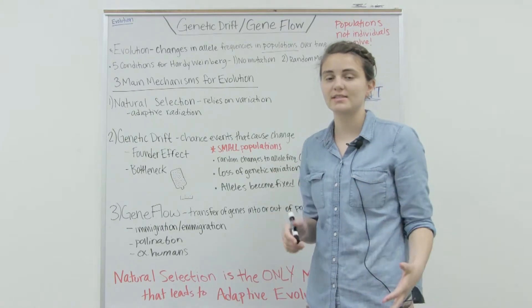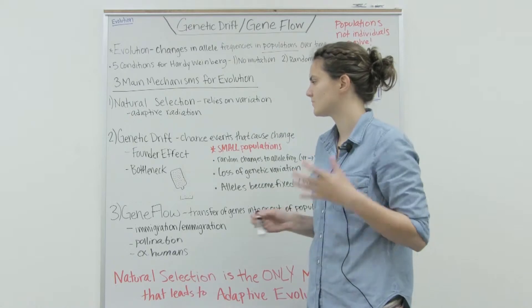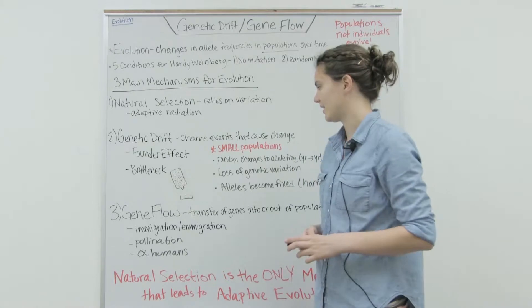Two important types or applications of genetic drift are the founder effect and bottleneck effect.